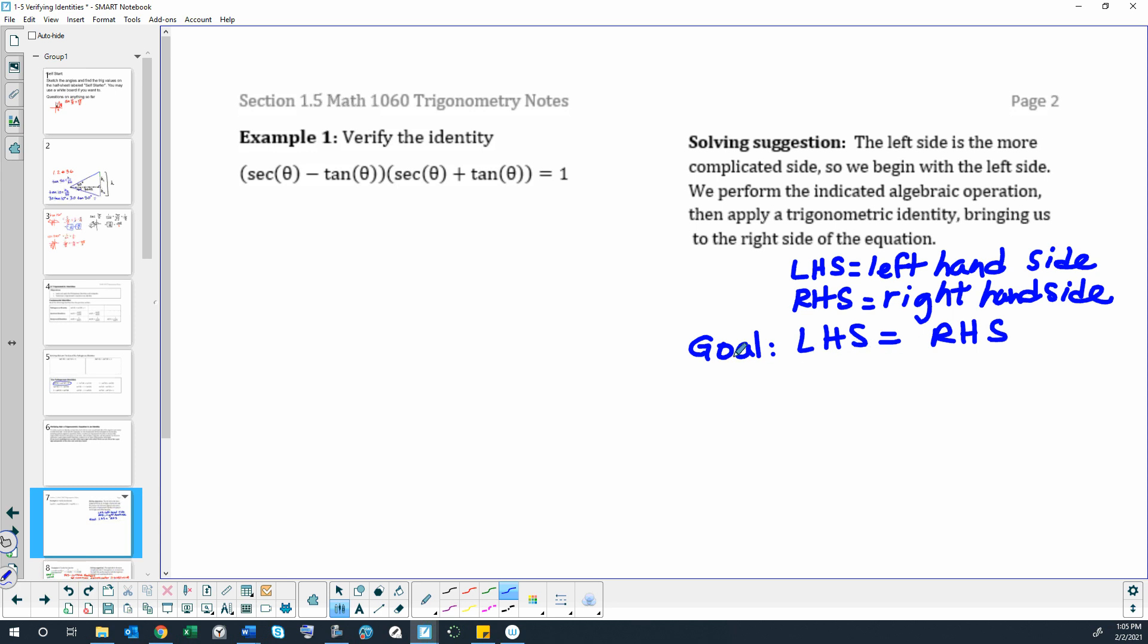So they are equal. When we get to the end of the proofs, there's some different ways to indicate that. Some textbooks will use three little dots to say this has been proved. Another thing to use is called QED, which is short for three Latin words that literally mean it has been proven.